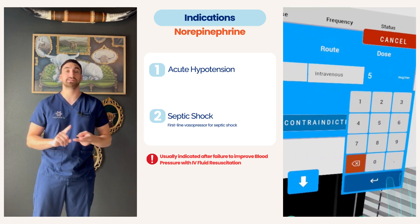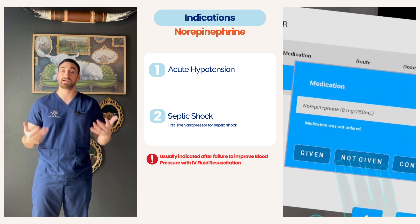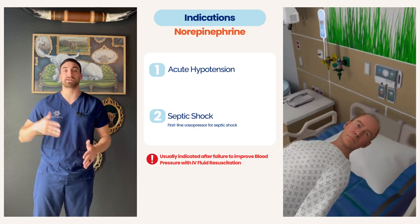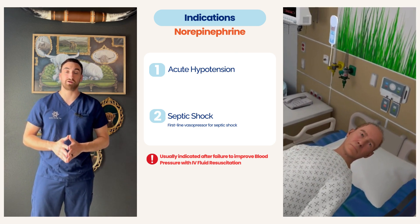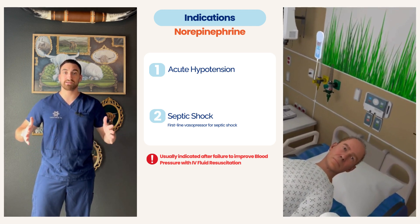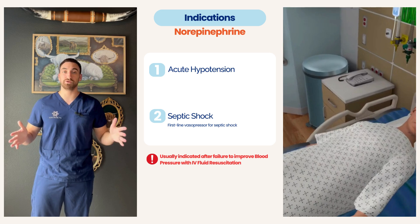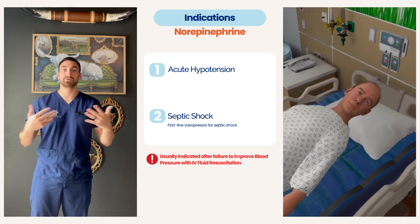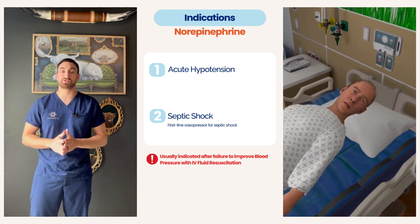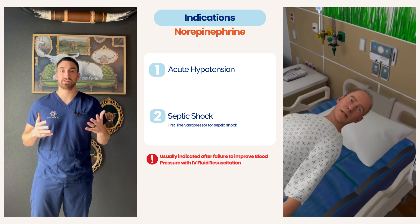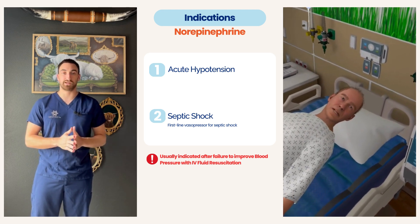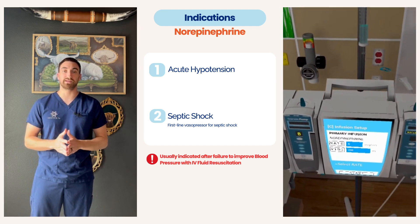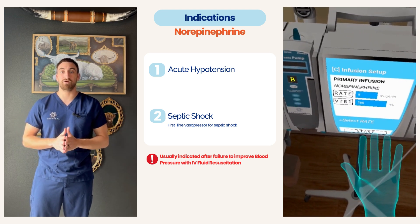The most common indications are acute hypotension and septic shock. In this VR simulation, we're running a sepsis case scenario. With a sepsis patient, we try fluid resuscitation first, and if non-responsive, we go to a vasopressor. This is common with septic patients because of third spacing — severe hypotension dilates the vascular system, increasing fluid permeability. That fluid leaves the vascular space and goes into tissues, so blood no longer circulates to the organs. Fluids also don't stay in the vascular space in sepsis because it's more permeable, so a vasopressor is needed.